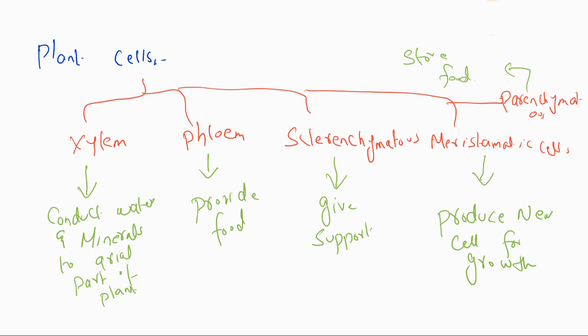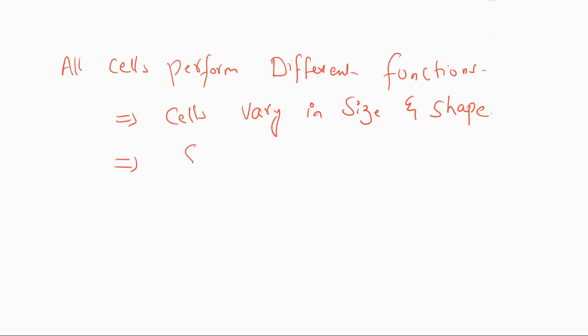In animals and humans, there are different types of cells. In plants, there are xylem, phloem, sclerenchymatous, meristematic, and parenchymatous cells, and every cell has a specialized function which it performs. All cells perform different functions. They vary in size and shape, but the plan of organization is the same.